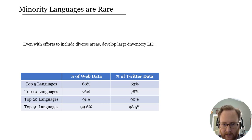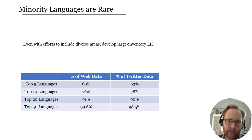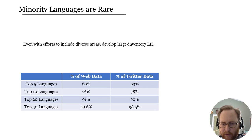Even after making an effort to collect data from more places and include more languages, there's a significant false positive problem. Because so much data from the web is in top languages, a lot of the corpora we put together for smaller languages end up being contaminated with English or majority language samples. With a language ID classifier, the sheer number of false positives becomes an issue when the vast majority of samples being classified are in majority languages.